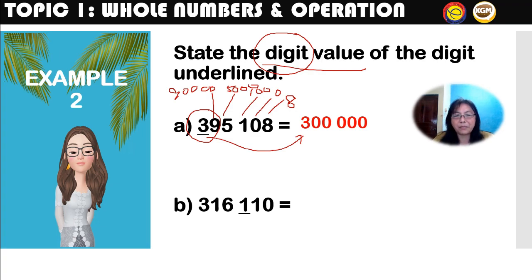Let's look at part B. The digit value of 0 at the back is of course 0. Digit value of 1 (ones) is 1. Digit value of 1 (hundreds position) is 100. Digit value of 0 is 0.